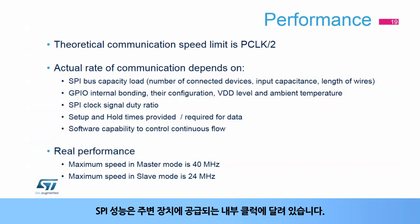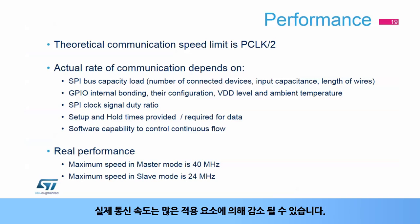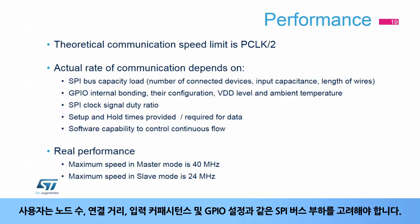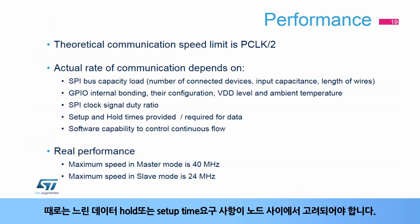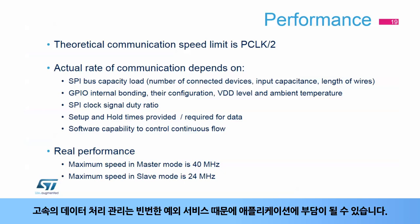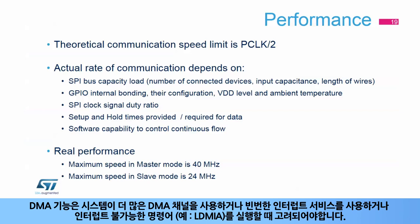The SPI performance depends mainly on the internal clock applied to the peripheral. The peripheral clock should be at least double the maximum achievable communication frequency. The actual rate of communication can be decreased by many application factors. The user has to consider SPI bus loads such as the number of nodes, the connection distance, input capacitance, as well as GPIO settings. Fast GPIO mode should be applied on the data and clock signals. Lower power supply voltages and extreme ambient temperatures also slow down the GPIO edges. Sometimes, slower data hold or setup time requirements have to be respected between the nodes. Managing a fast data flow can be demanding for application software due to frequent servicing of exceptions. The DMA capacity has to be considered as well when the system uses more DMA channels, frequent interrupt services, or executes non-interruptible instructions, such as LDMIA.